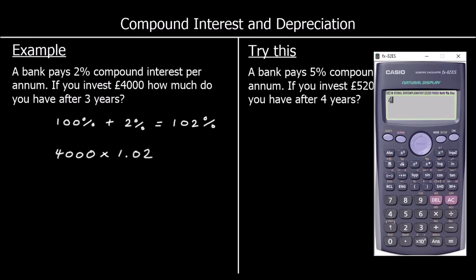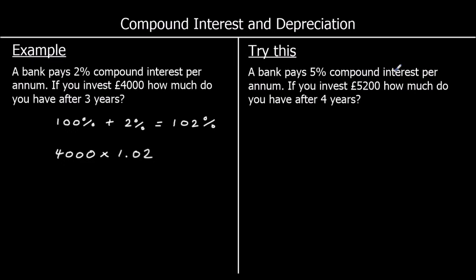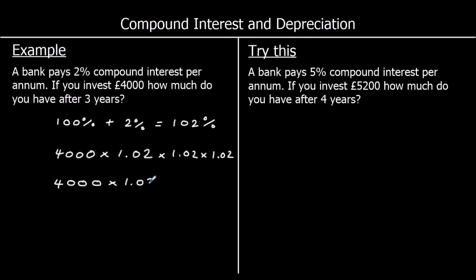If you grab a calculator and write 4,000 multiplied by 1.02, you can see that at the end of the first year you've got £4,080. But then you want to add on 2% again, so you multiply by 1.02 for the second year, and again by 1.02 for the third year. If we've got a number times by itself and times by itself again, we can say that's cubed. So it's 4,000 times 1.02 cubed.